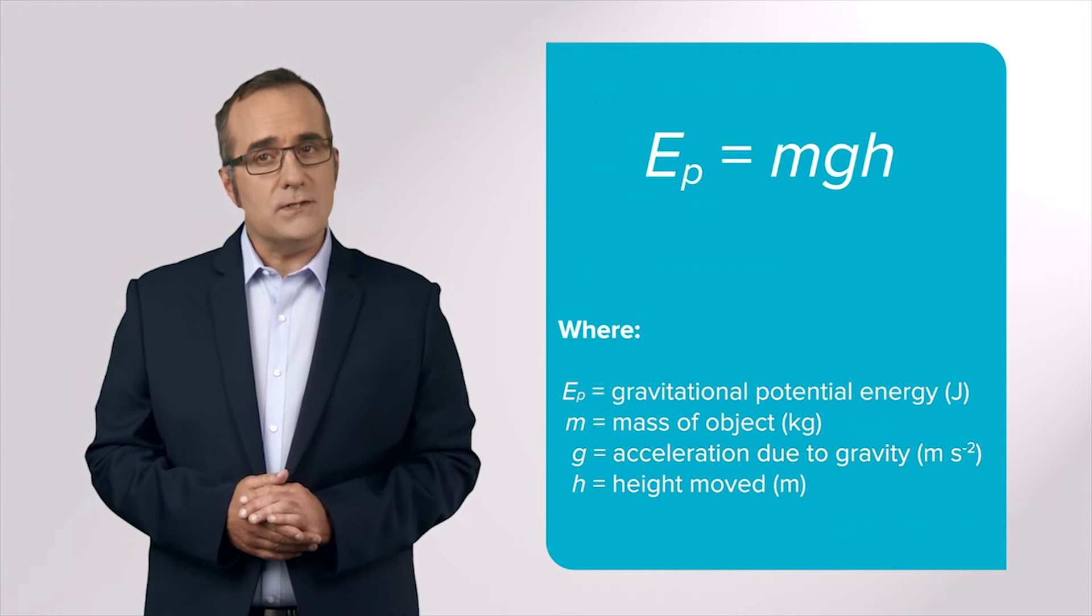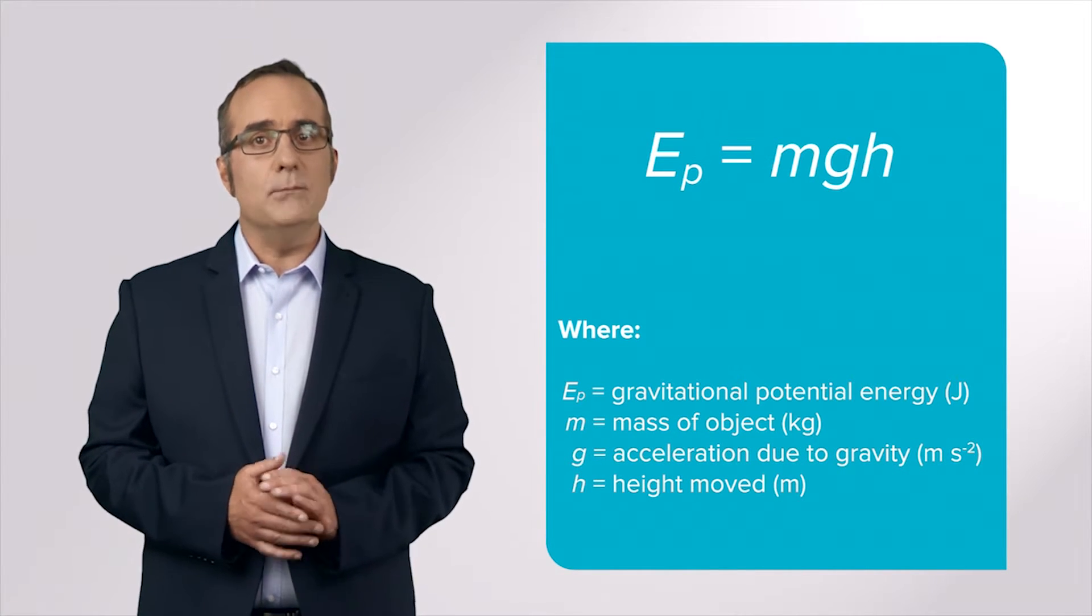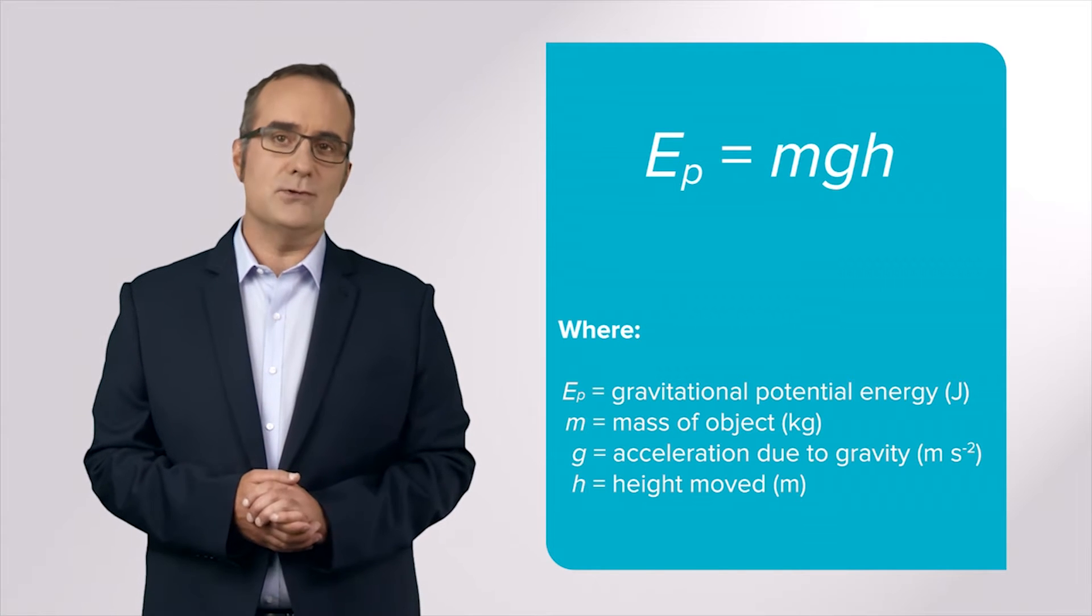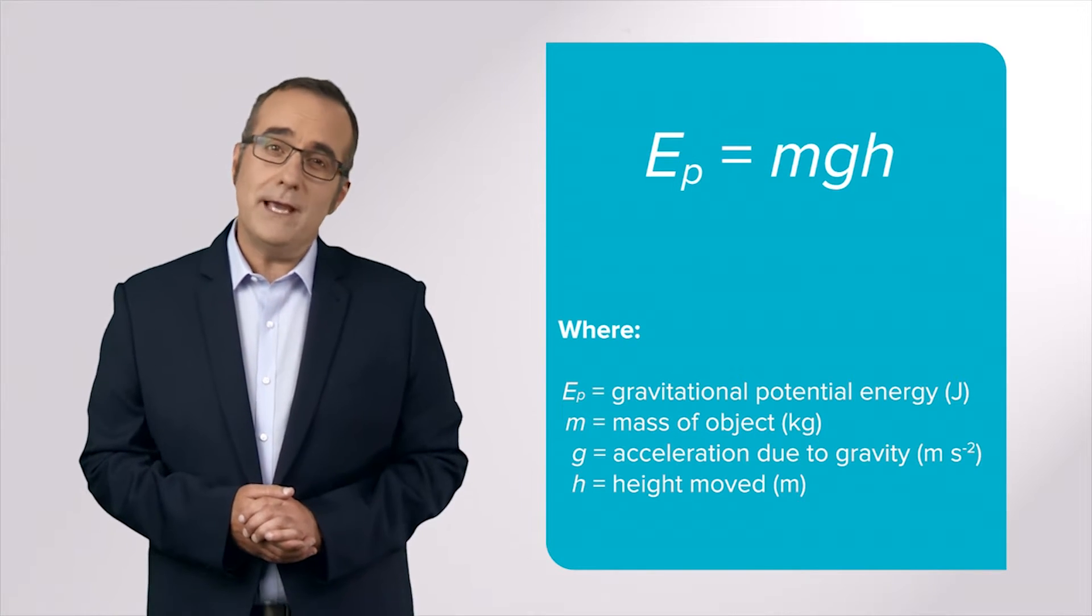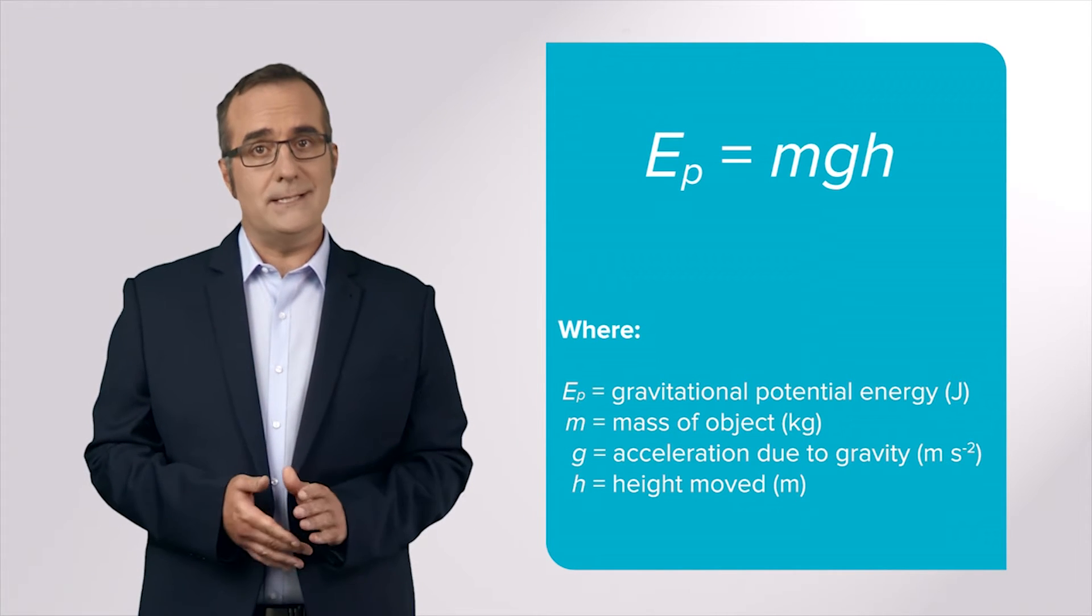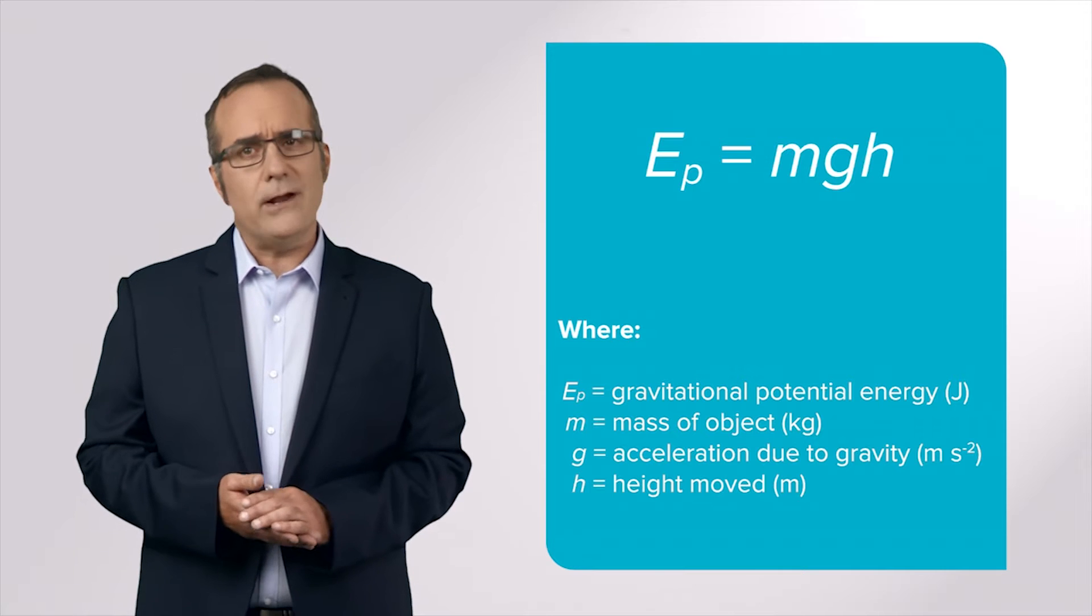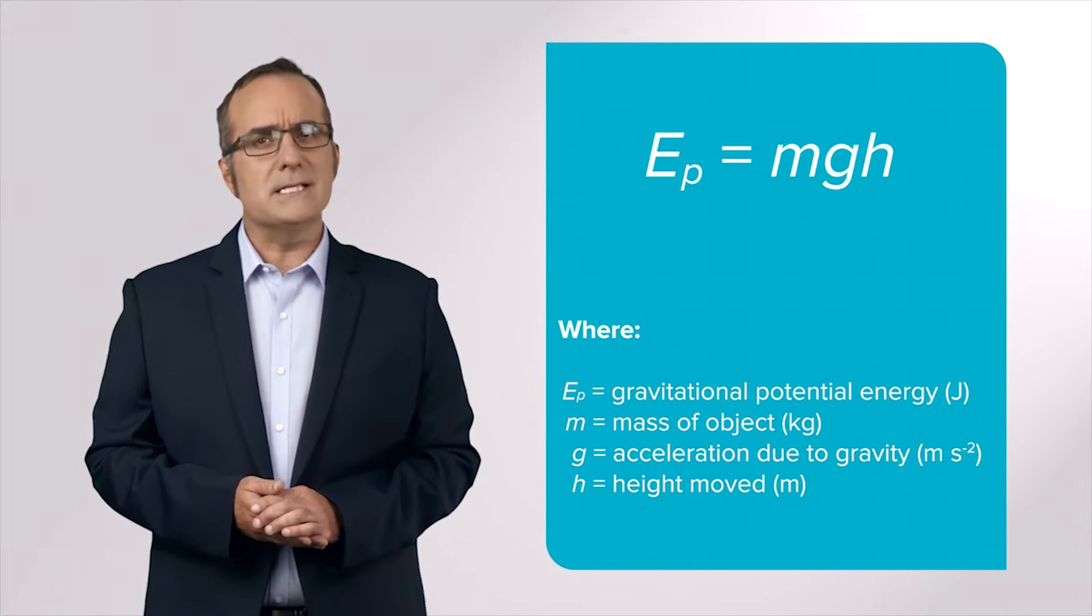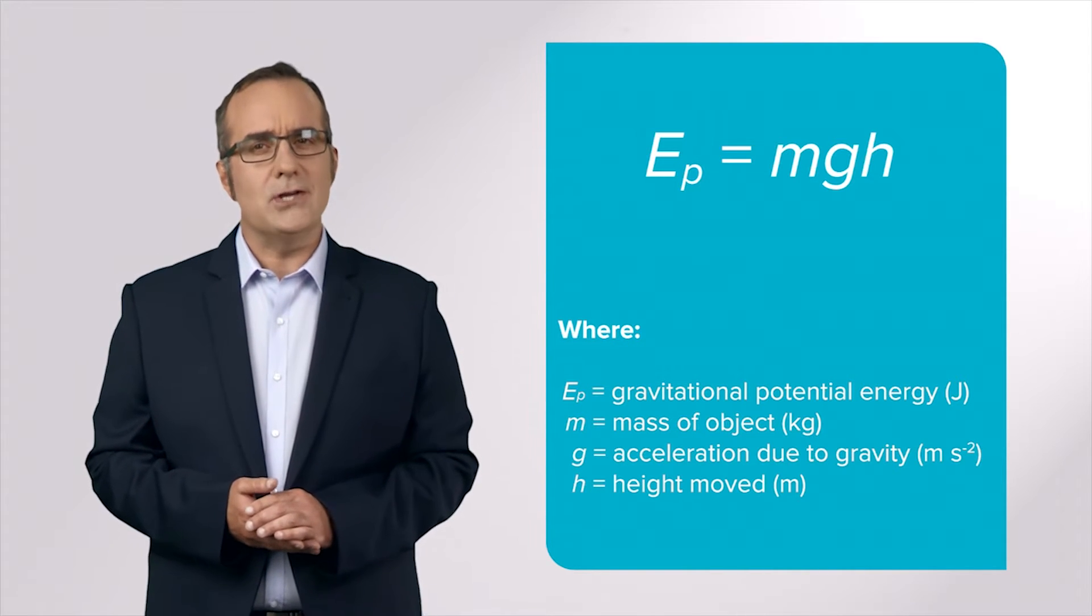This equation is suitable to use for objects that move within a constant gravitational field. However, when we think about objects on a larger scale, such as satellites or planets or moons, we cannot use this equation because the value for g will change as we move the object further from the centre of mass.